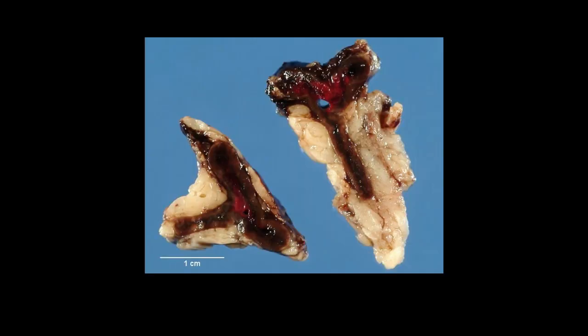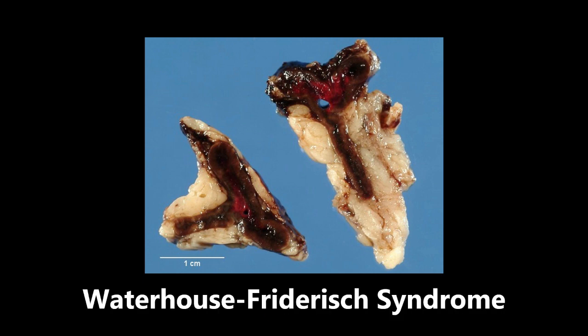This is a picture of the adrenal glands, and we're seeing all this discoloration. This is hemorrhage within the adrenal glands, and there's really only one thing we need to know for the exam that causes this: Waterhouse-Friderichsen syndrome. If you see this image, they're getting at bilateral adrenal hemorrhage and this disease.